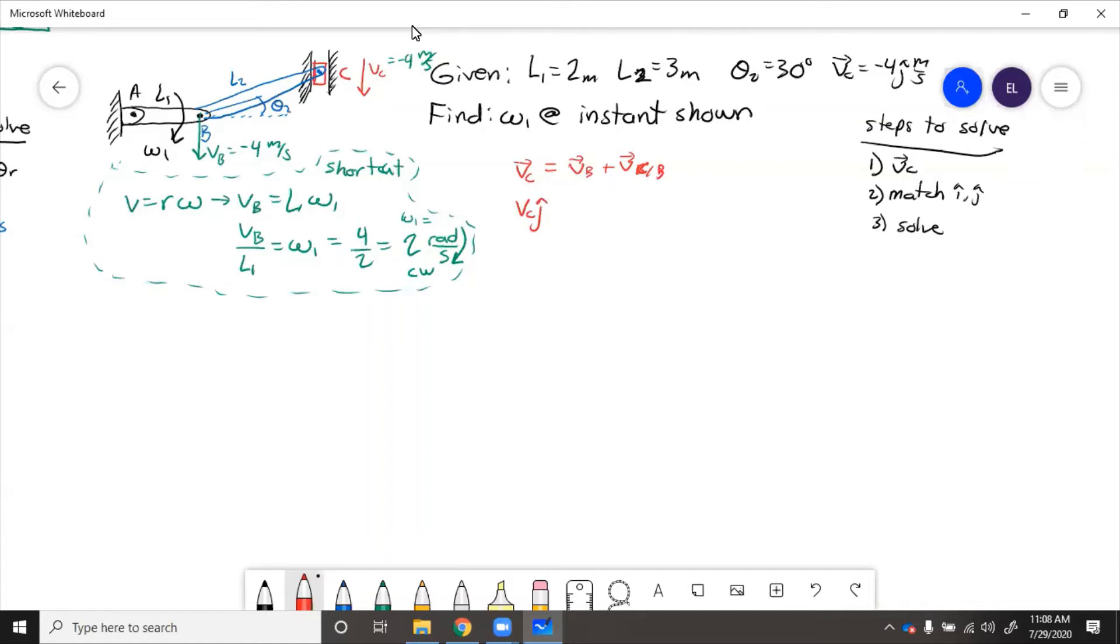vc is only up and down, so that's j hat. And that equals vb, which is omega 1 cross with r b with respect to a plus velocity of c with respect to b, which is omega 2 cross with r c with respect to b.